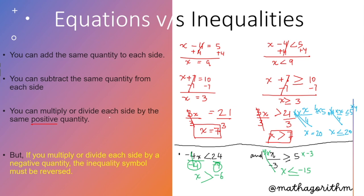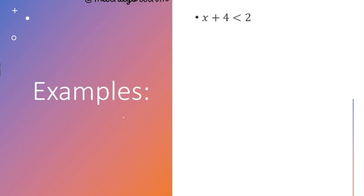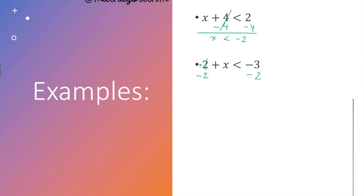Now let's see some examples. First: x plus 4 is less than 2. The opposite of positive 4 is negative 4, so subtract 4 from both sides. Positive 4 and negative 4 cancel, leaving x less than 2 minus 4, which is negative 2. So x is less than negative 2. Next: 2 plus x is less than negative 3. Subtract 2 from both sides — 2 and 2 cancel, giving x less than negative 5.